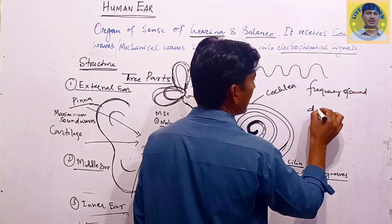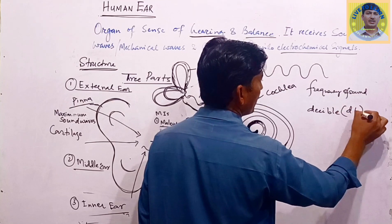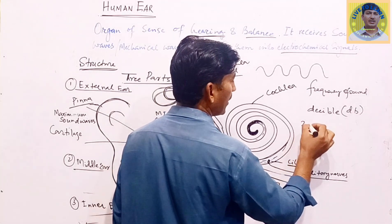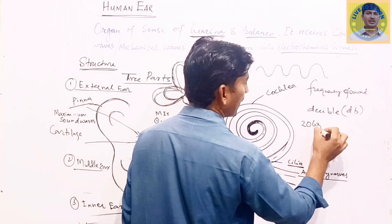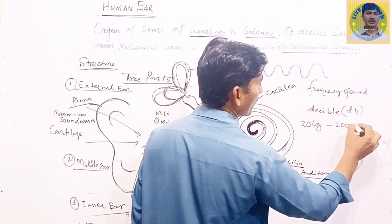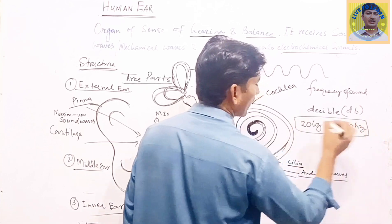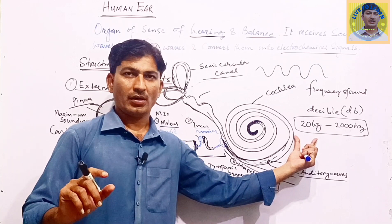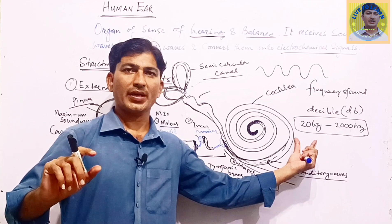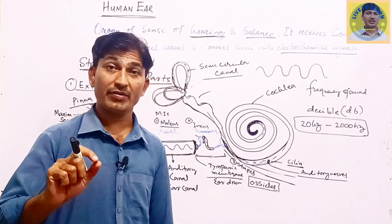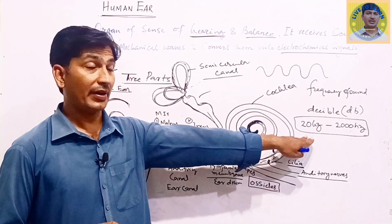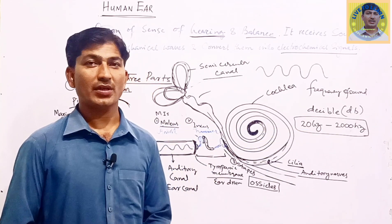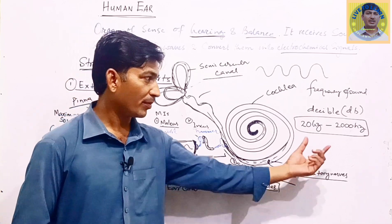The frequency of sound is measured in hertz, written as Hz. The human ear can detect sound vibrations from 20 hertz per second up to 20,000 hertz per second. Below 20 Hz we cannot detect any sound — for example, when an earthquake comes, birds, dogs, and animals can hear the sound but we cannot, because the frequency is too low. Similarly, we cannot hear sound above 20,000 Hz, and if the sound wave reaches a very high maximum range, it can burst or rupture our eardrum.